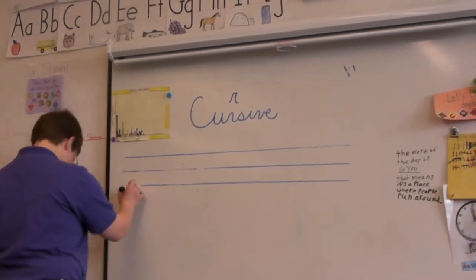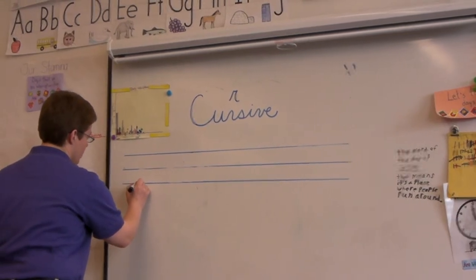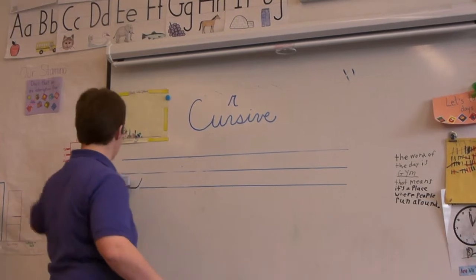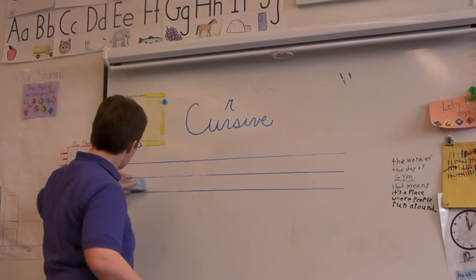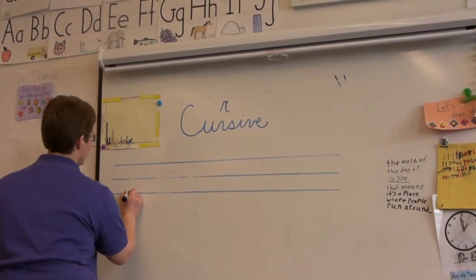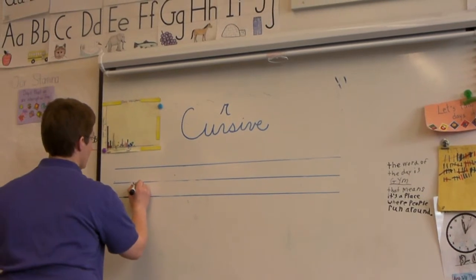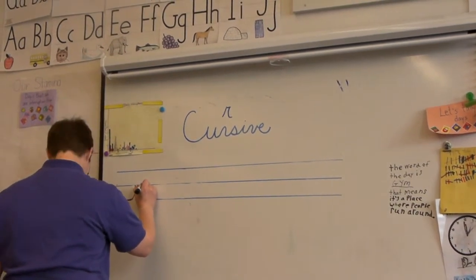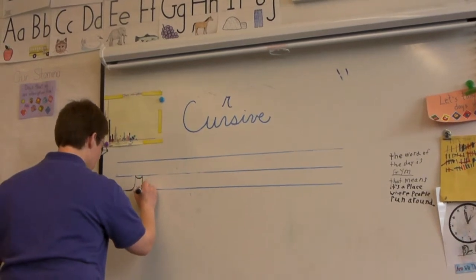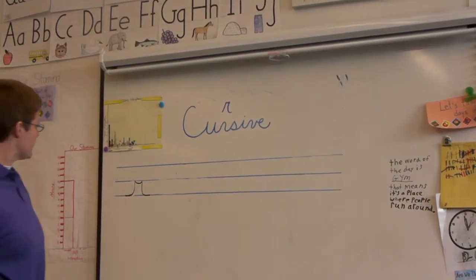Now, when you do an R, you start right on the line. Travel across. Oh, I don't like the way that is right now. My marker kind of got away from me. Okay, travel across, travel up, bump. And I like this one because it's smile. Travel up, bump, smile, down, bump, and travel away. Okay?